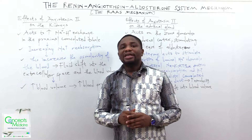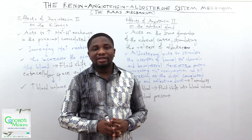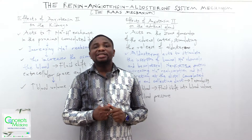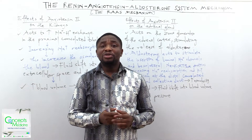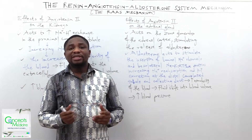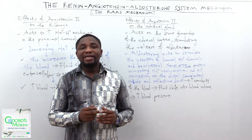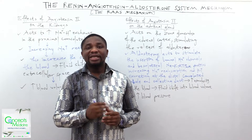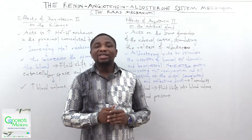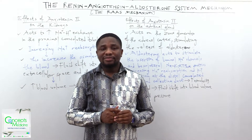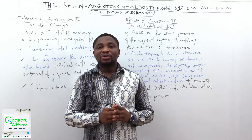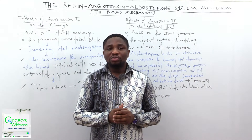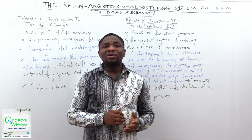Angiotensin-2 acts on the zona glomerulosa of the adrenal cortex, stimulating the release of aldosterone. Aldosterone is a steroid hormone, and like all steroid hormones, it takes several hours to days to act because it needs to bind to nuclear receptors, permeating the cell all the way to the nucleus to alter gene transcription. Angiotensin-2 has a half-life of 1 to 2 minutes, compared to the longer half-life of aldosterone.